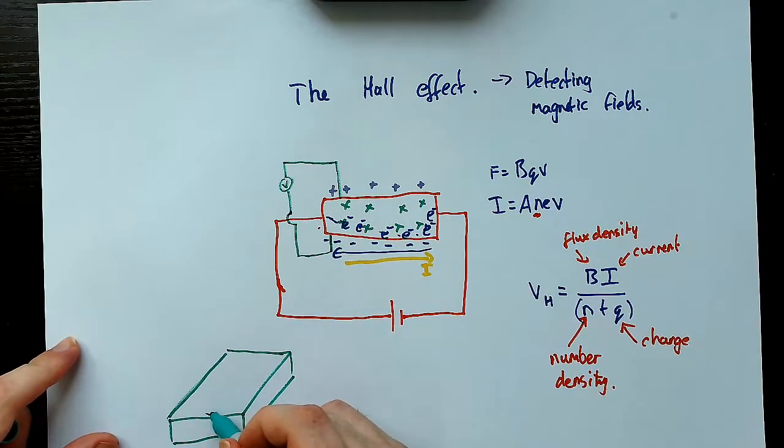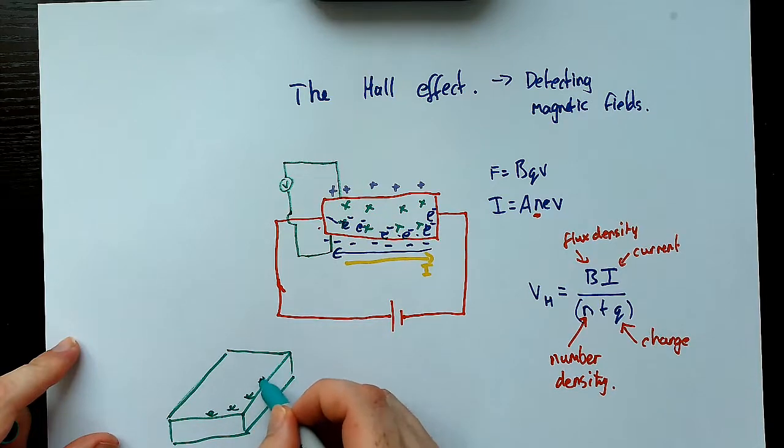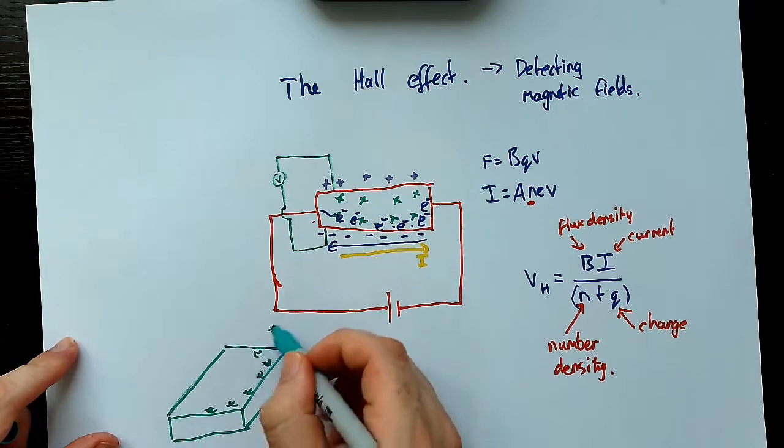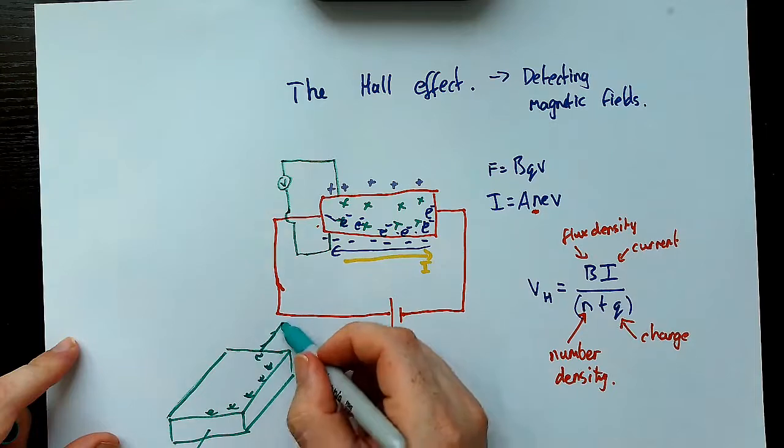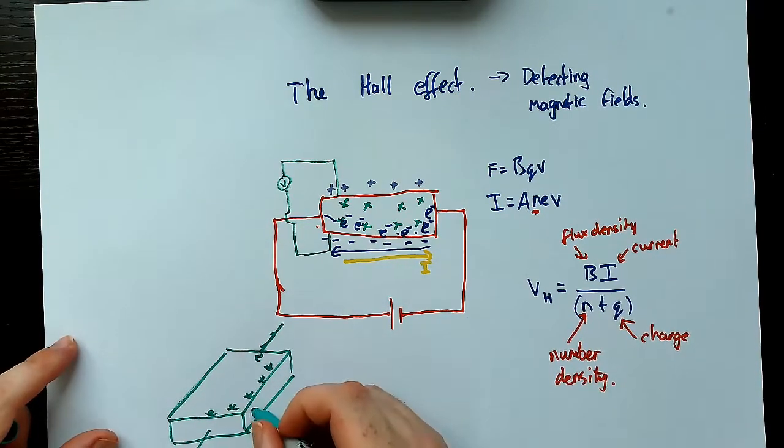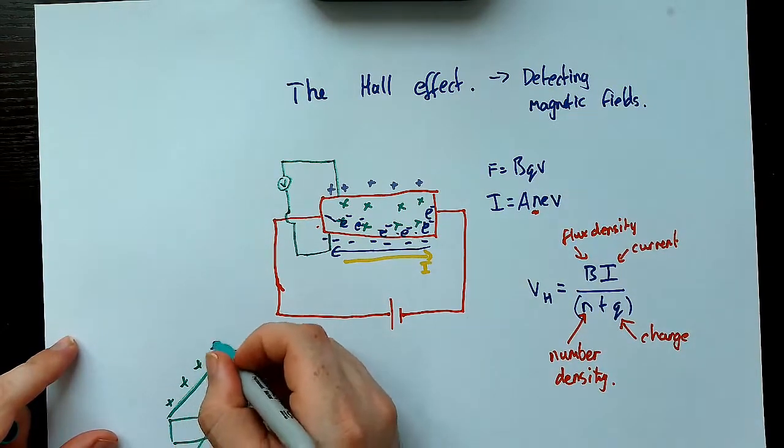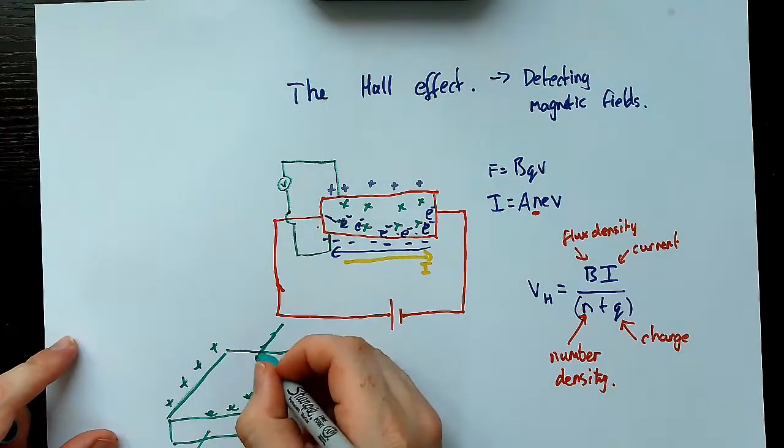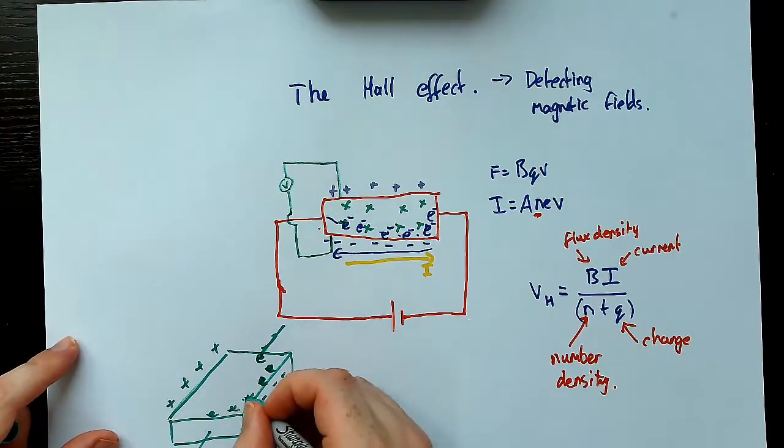And obviously we observed the electrons, you know, going, following this path across from one side to the other. And this is obviously our negative side and this is our positive side. So this is me just kind of redrawing it and trying to draw it a bit more three-dimensionally.